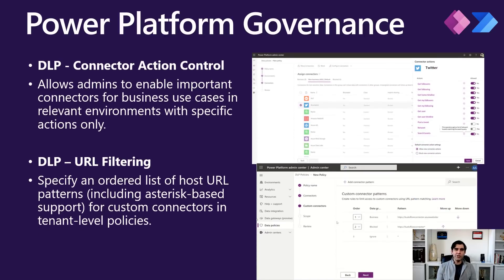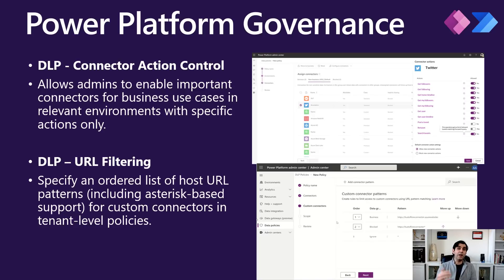Around data loss prevention policies, you can now define your DLP policies at an action level for a connector. For example, for the Twitter connector, you can now block specific actions such as posting a tweet or retweeting, while allowing other actions. There is also DLP URL filtering — in the case of custom connectors, you can define an ordered list of host URLs, including patterns, that are allowed at a tenant level.